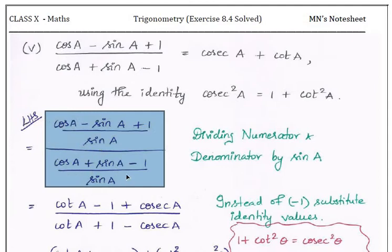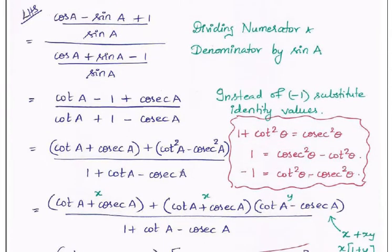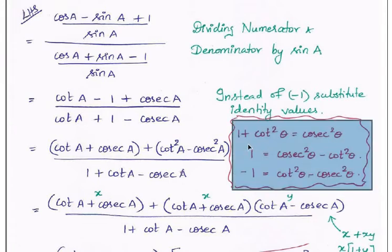After dividing by sin·A: cos/sin becomes cot, sin/sin becomes 1, and 1/sin becomes cosec. So the numerator becomes cot·A - 1 + cosec·A and the denominator becomes cot·A + 1 - cosec·A. Now we apply the identity: from cosec²·A = 1 + cot²·A, rearranging gives 1 = cosec²·A - cot²·A. Therefore, minus 1 = cot²·A - cosec²·A.